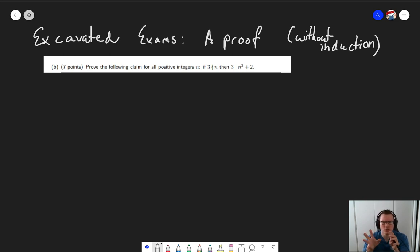I took this one from an exam where we hadn't covered induction yet, so induction can't be the way to do it. Although if you want to give it a go using induction, you should of course feel free to try it, though I still wouldn't recommend it. So how can we do this then? Let's first take a good look at the claim. The claim says for all positive integers n, if 3 does not divide n, then 3 divides n squared plus 2.